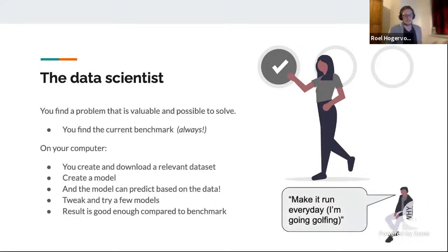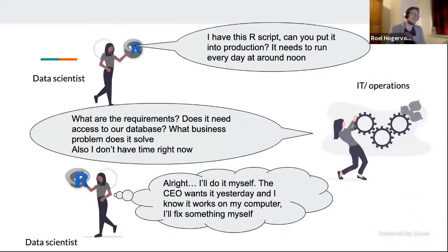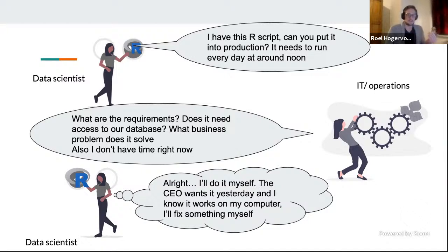The CEO hears this, he's very happy. He says: okay, make it work. Goodbye. So you end up talking to the IT people or the operations people. You ask them: I have this script here — it needs to run, can you make this happen for me? And what often happens is they have a lot of questions. What do you mean this solves a problem? What kind of access do you need? What kind of resources do you need? This kind of questioning can become bothersome. You might think: you know what, I'll just do it myself. I know some stuff — I watched a talk by Roel, so I'll just follow one of his links and fix it myself. Please don't do that.